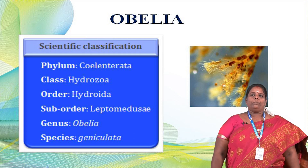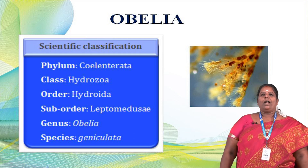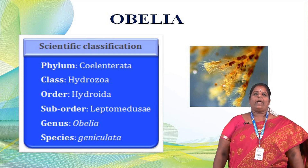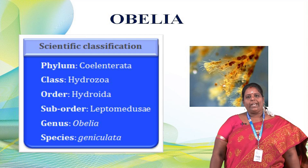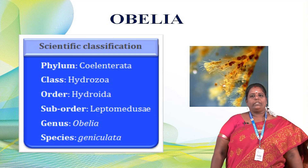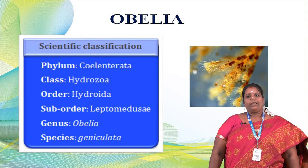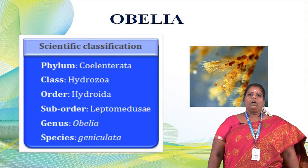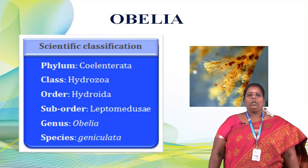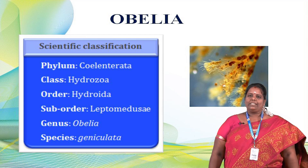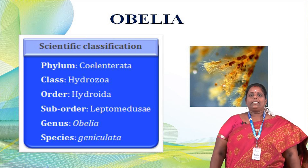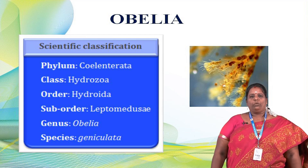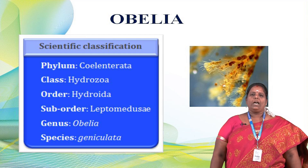Now, what is its phylum? The phylum is Coelenterata and the class is Hydrozoa. The order is Hydroida, and the suborder is Leptomedusa. The genus is Obelia and the species is geniculata. So we call it Obelia geniculata — that is the full name. This species name is shortened to just Obelia colony.